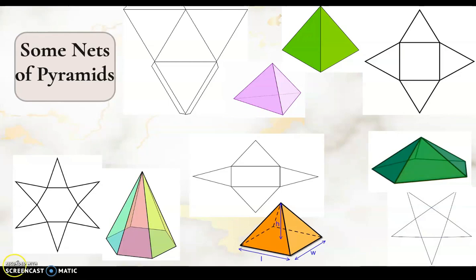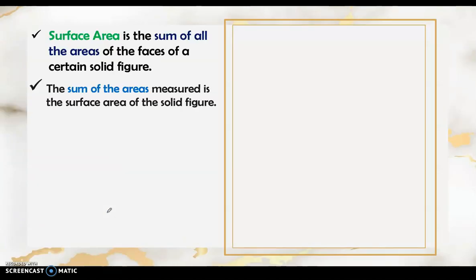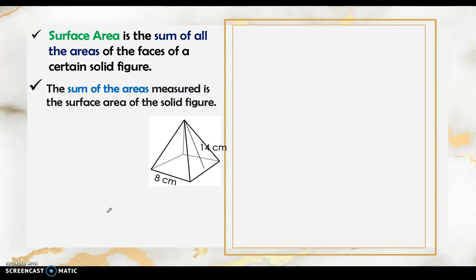Our lesson focuses on getting the surface area of pyramids, specifically square and rectangular pyramids only. The surface area is the sum of all the areas of the faces of a solid figure. So if we have a square pyramid, what we're going to do is find its surface area.